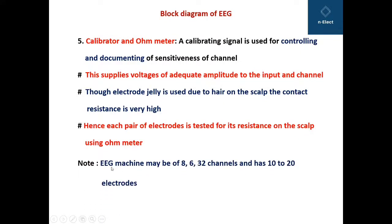As far as EEG machines are concerned, they may be of 8, 16, or 32 channels and have 10 to 20 electrodes. These are the different types of EEG machines and their features.